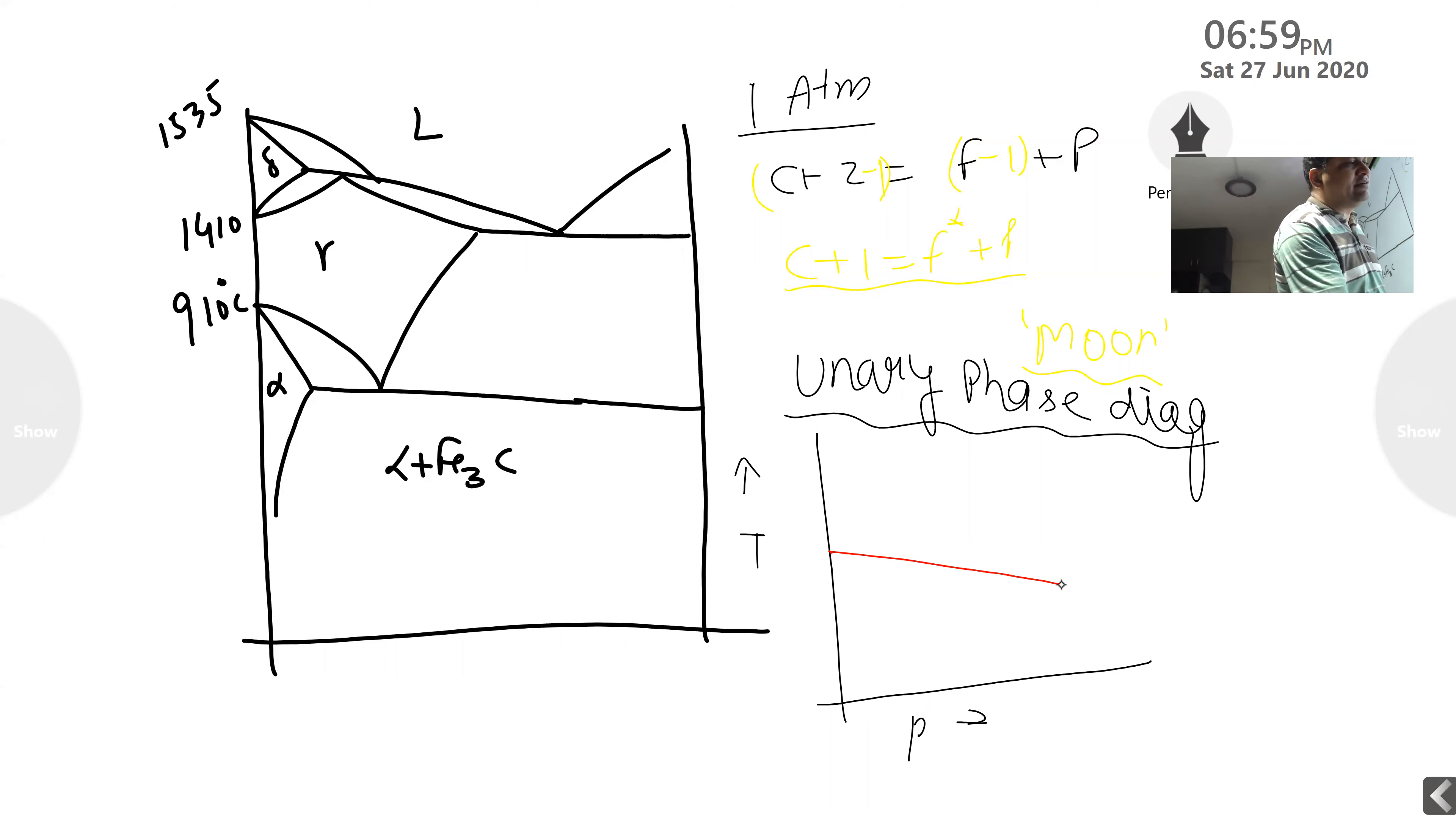Something like this, something like this, and then like this. This is alpha, this is gamma, this is delta, this is gamma, this is liquid. And here it is hexagonal close-packed structure. This is alpha, this is BCC. This is FCC. This is delta BCC.